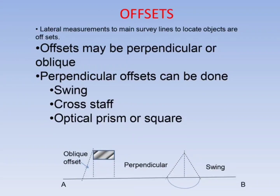Offsets are lateral measurements from main survey lines to locate objects. Offsets may be perpendicular or oblique. Perpendicular offsets can be done by swinging, or using a cross-tab, optical prism, or square.